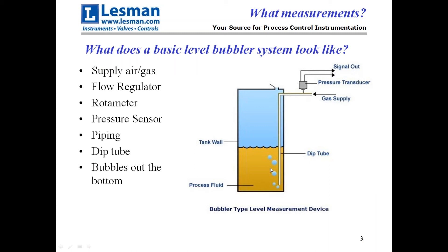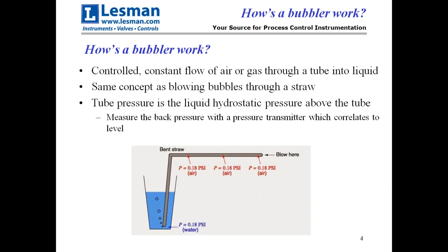Before we get into the details of each application, let's go into what makes a basic bubbler. A basic bubbler has some kind of supply air or gas that comes into it, goes into a flow regulator, flows down the tube, and makes bubbles in the liquid. In order to get a measurement, we've got either a pressure transducer, a gauge, or something up on top that tells us what the back pressure in the tube is. That's your basic bubbler.